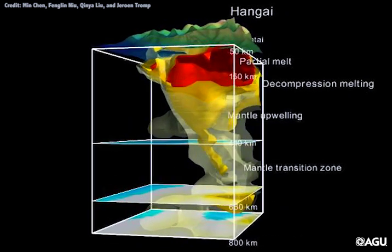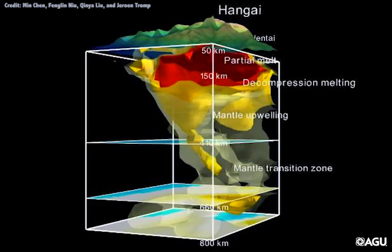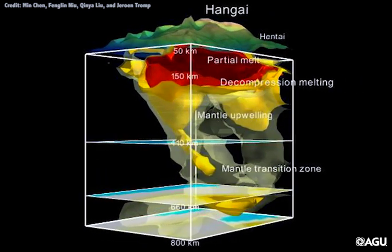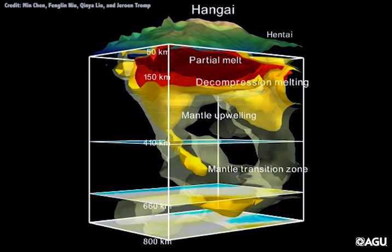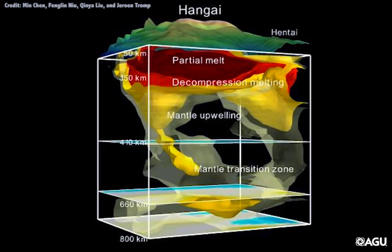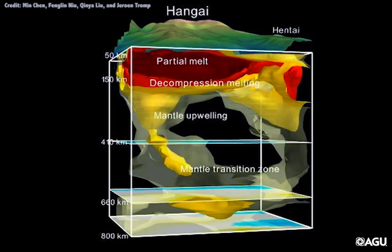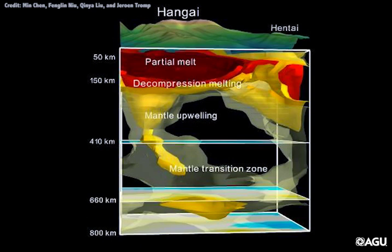Heat released by the magma modifies the reached outer layer of the Earth that is now lighter and rises up, creating the Hangai Dome.